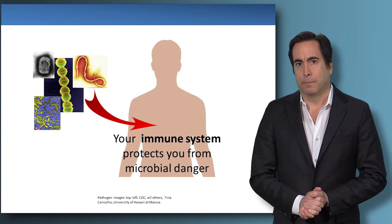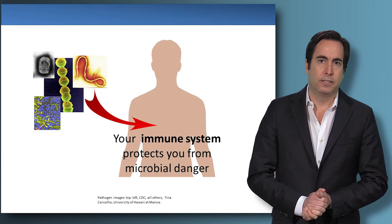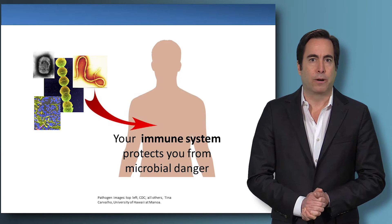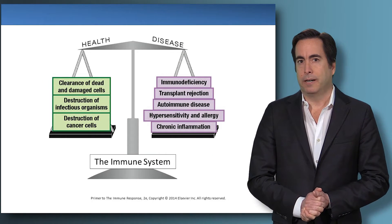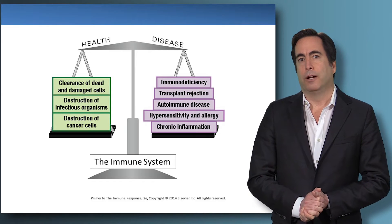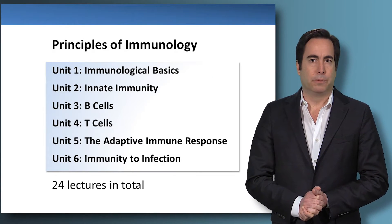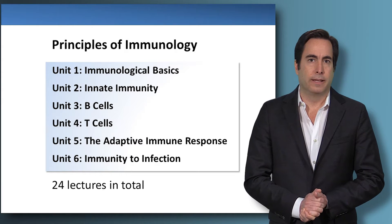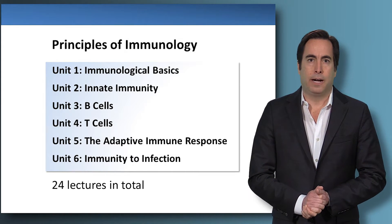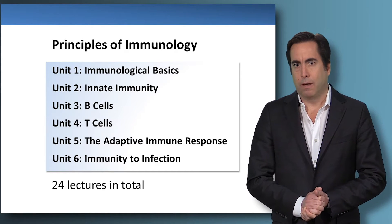Your immune system provides biological responses that protect you against constant challenges by bacteria, viruses and other microbial threats. At the same time, poorly regulated immune responses play a role in many forms of disease. The immunological principles covered in the six units of this course will allow you to understand a biology that underpins almost all aspects of human health.